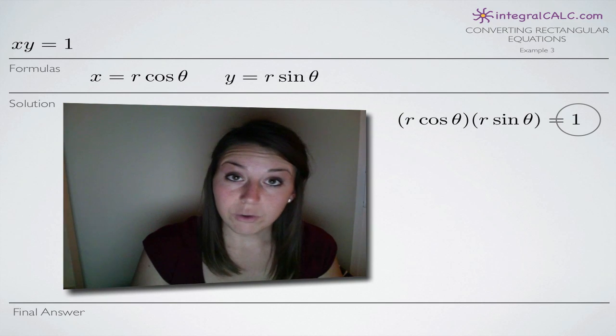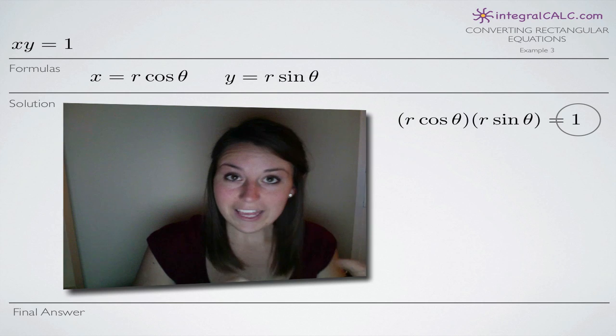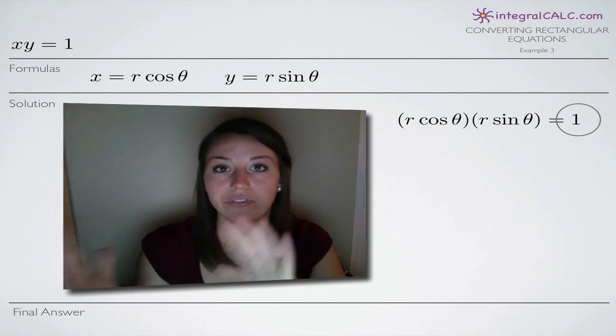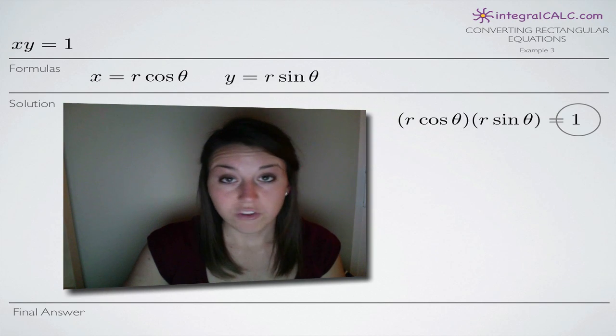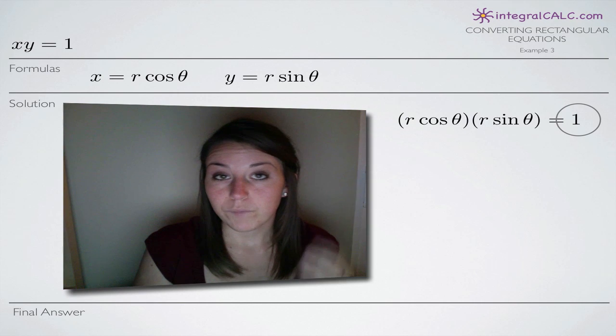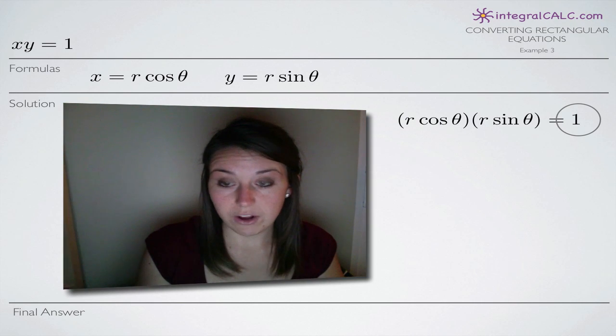Remember that with a rectangular equation, you usually see y equals something in terms of x. But with a polar equation, we're looking for r equals something in terms of theta. So that's what we're working toward. We're going to try to get r by itself on the left side and then have theta on the right side.